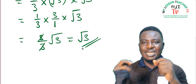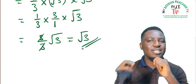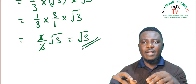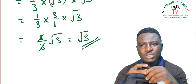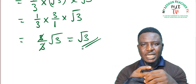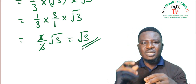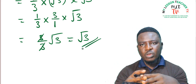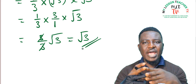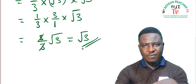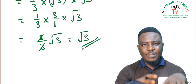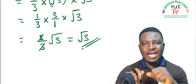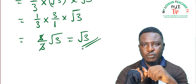That brings us to the end of today's class. In today's class, we have learned how to multiply surds. The way to multiply surds is to simplify them to their basic surd forms before you multiply. You can also go ahead to multiply before you simplify, but simplifying before multiplying makes it easier and better for you to solve.